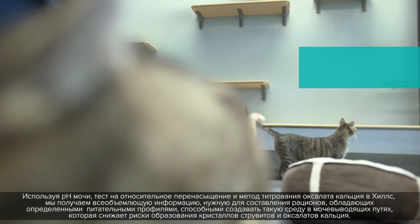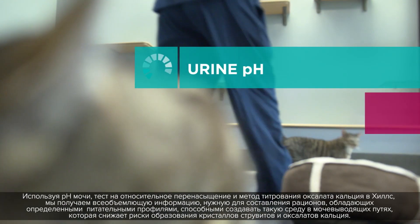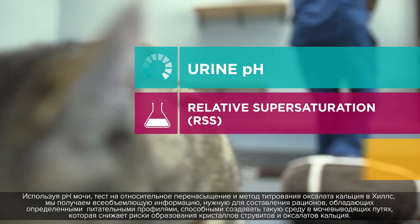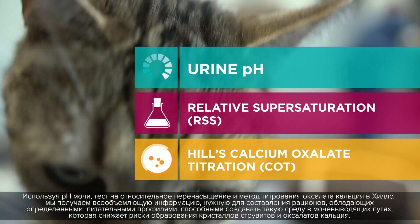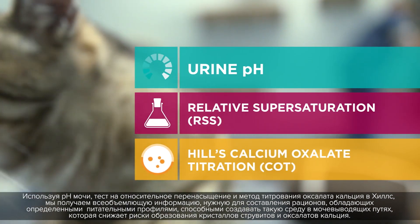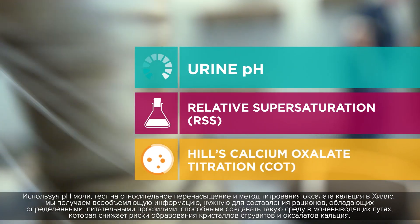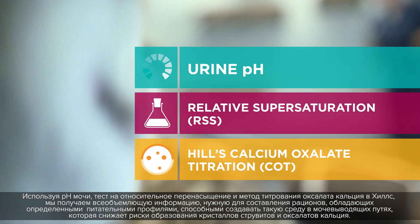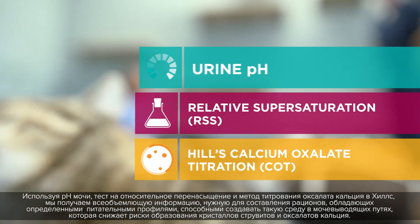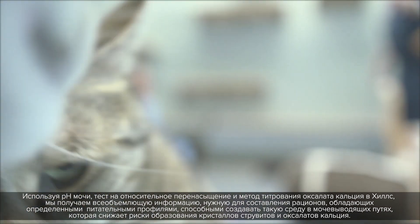By using urinary pH, RSS, and the Hill's COT test, we have comprehensive information to help us formulate foods that promote a urinary environment that reduces the risk of struvite and calcium oxalate crystals.